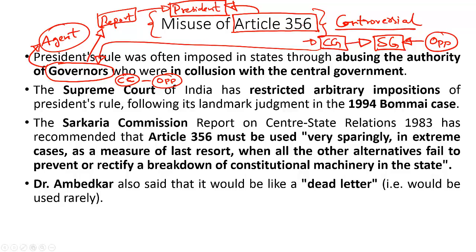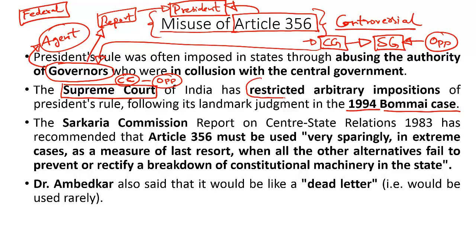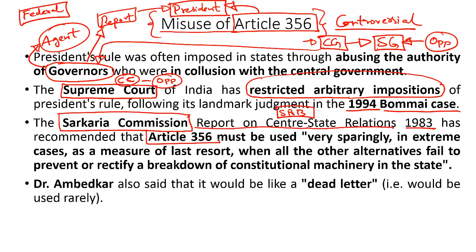This frequent abuse of Article 356 is a direct assault on the federal structure of the Indian Constitution. To prevent this abuse, the Supreme Court came out with a landmark judgment in 1994 through the Bommai case, imposing restrictions on arbitrary imposition of President's rule. The SR Bommai case restricted the misuse of Article 356. We also had the Sarkaria Commission, which gave a report on centre-state relations in 1983, recommending that Article 356 must be used very sparingly, only as a matter of last resort when all other alternatives have failed.